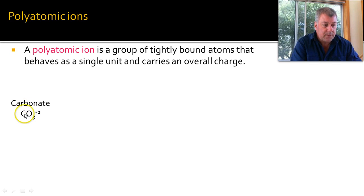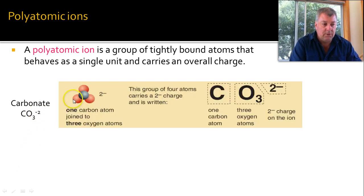So these groups of atoms bound together, let's have a couple of examples. One is carbonate. In the formula you can see there's one carbon and three oxygens joined together and overall has a minus two charge. That's what it looks like, one carbon with three oxygens and a minus two charge.